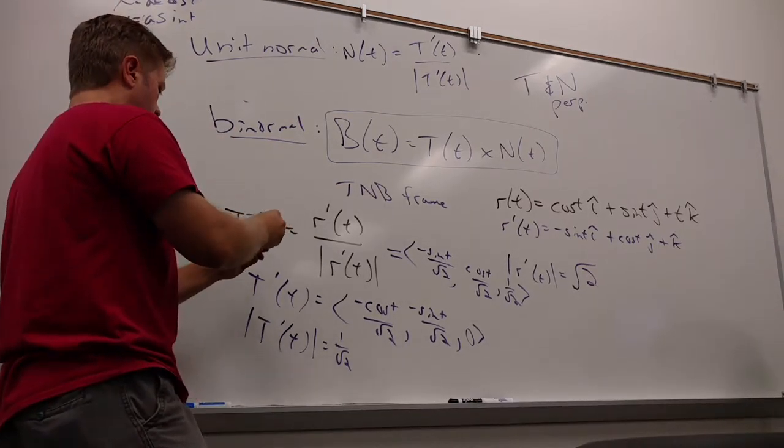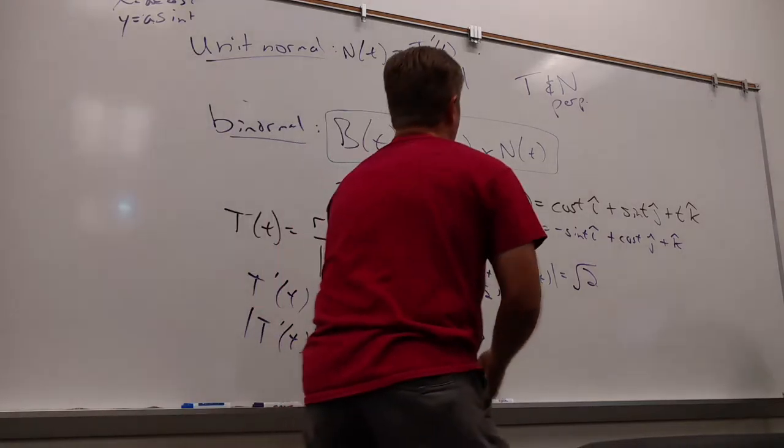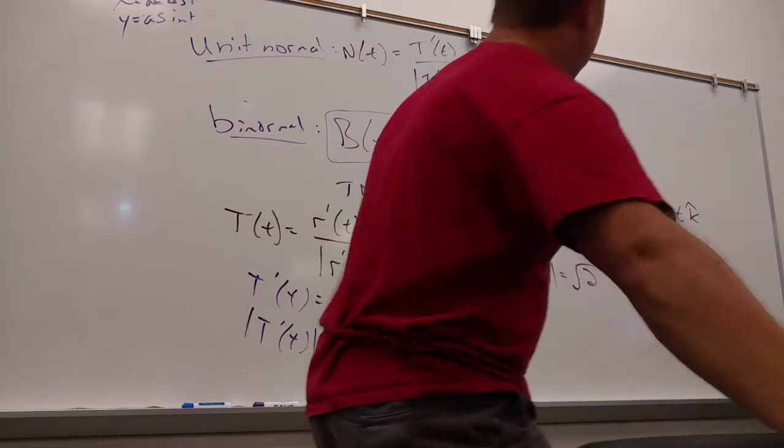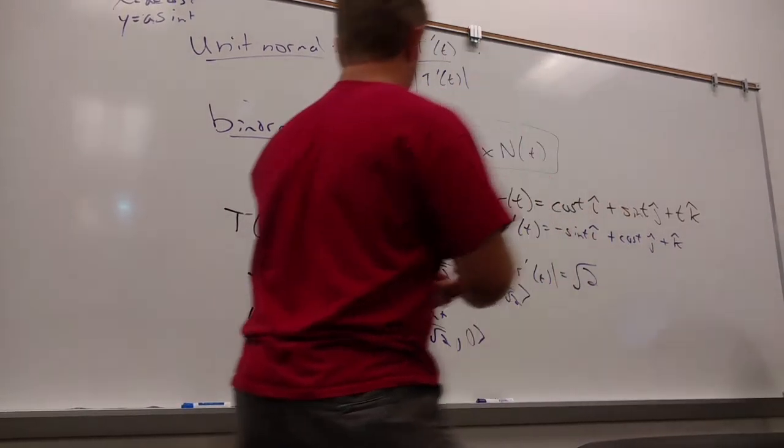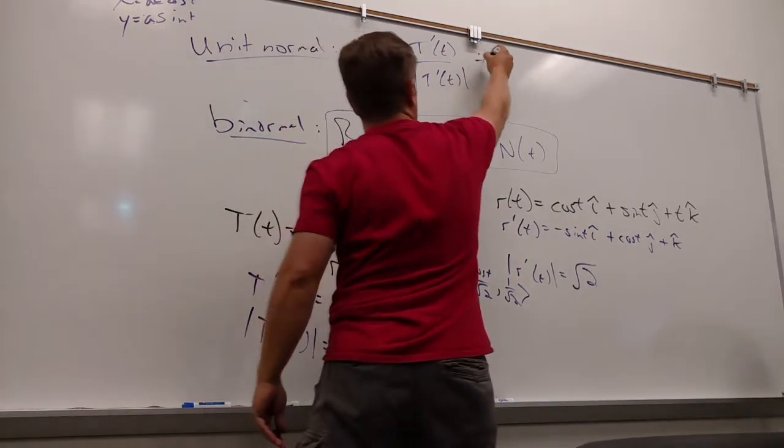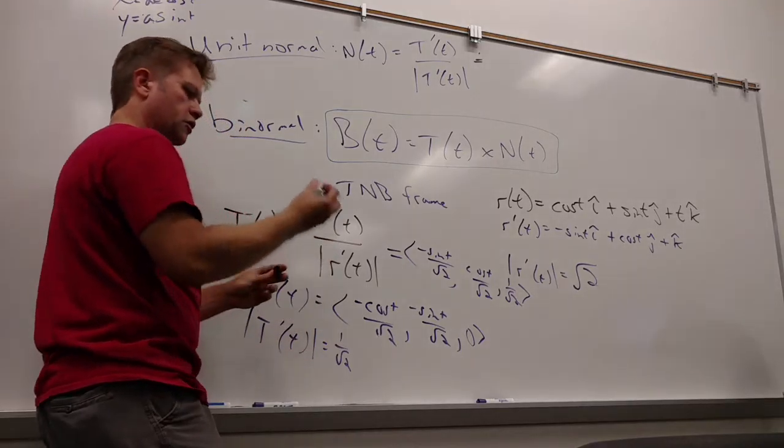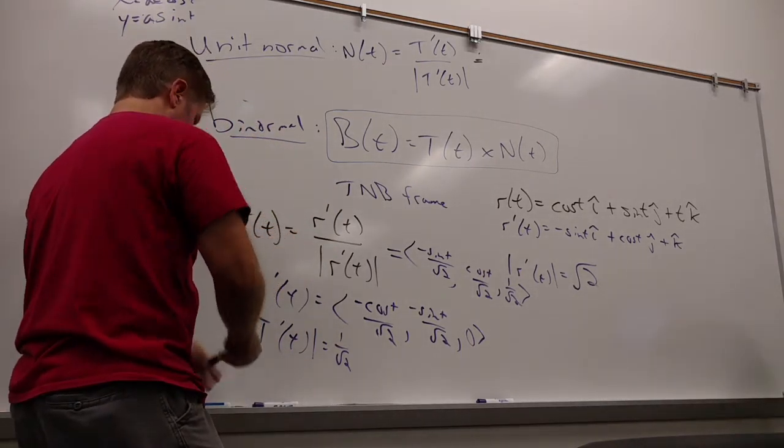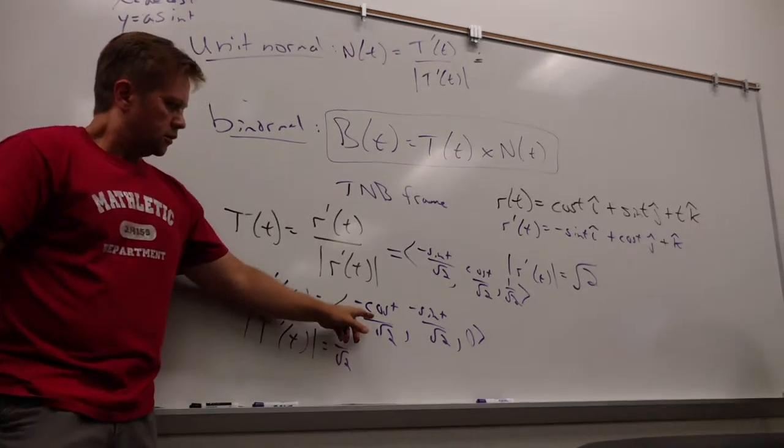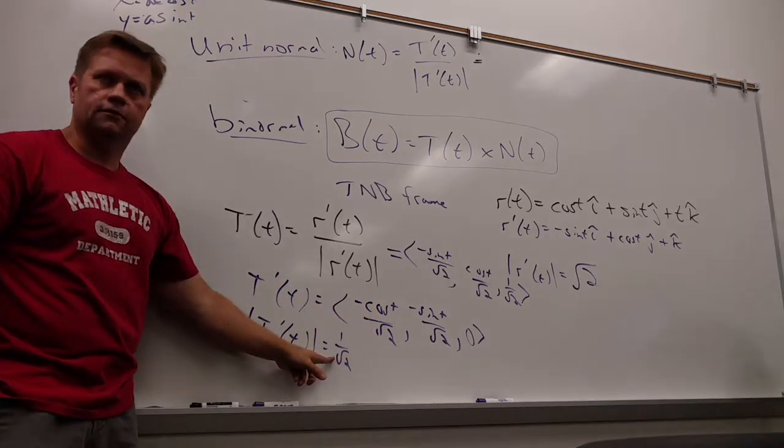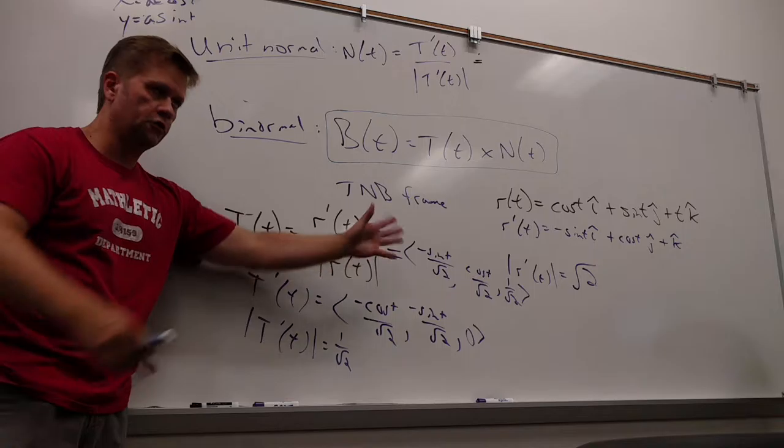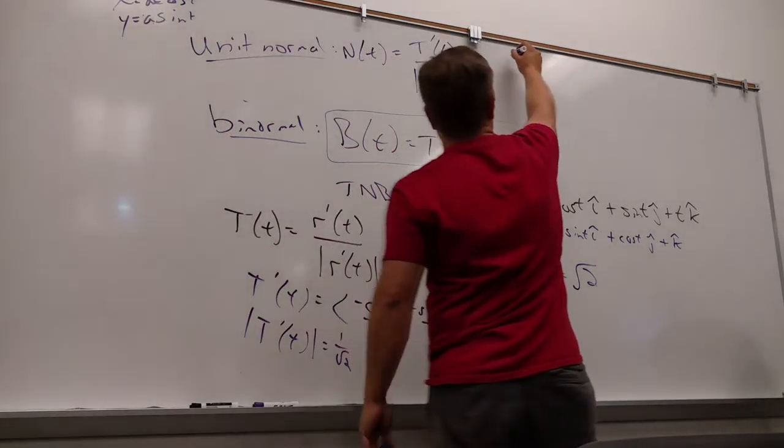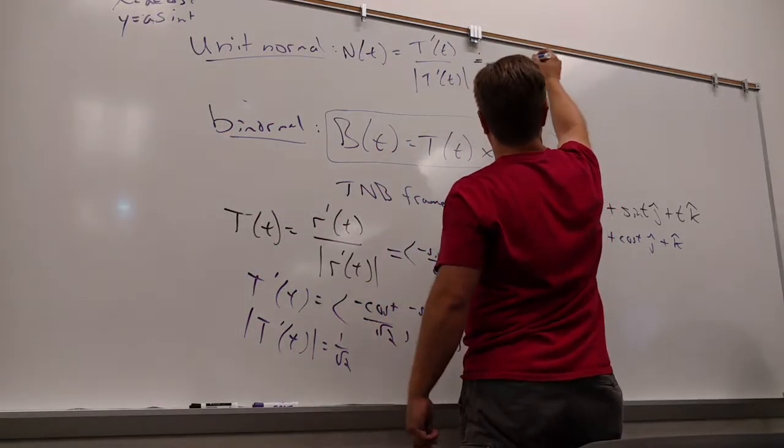All right, so then the normal vector. My high tech. It's going to be T prime divided by, oh, you're the dead one, aren't you? Poor little dude. If you divide this by this, all the root 2s cancel. I like it. So you get negative cosine, negative sine, zero.